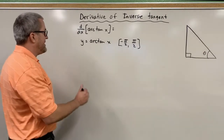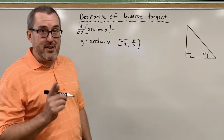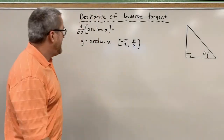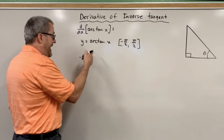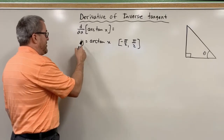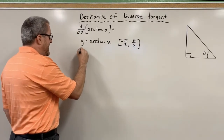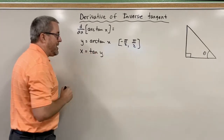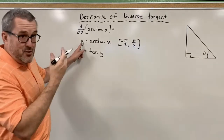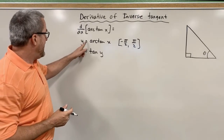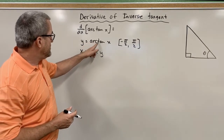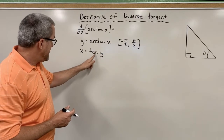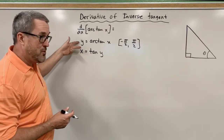So y is equal to the arc tangent of x. To take the derivative of arc tangent of x, we're going to use implicit differentiation and some other things that we know. An algebraic or trigonometric truth: if y equals the arc tangent of x, then we can equivalently say that x equals the tangent of y. In a complete sentence, y is the angle whose tangent is x. These two statements are equivalent.